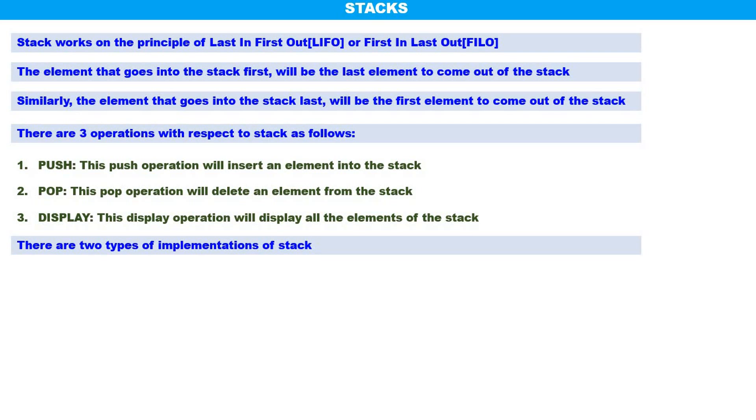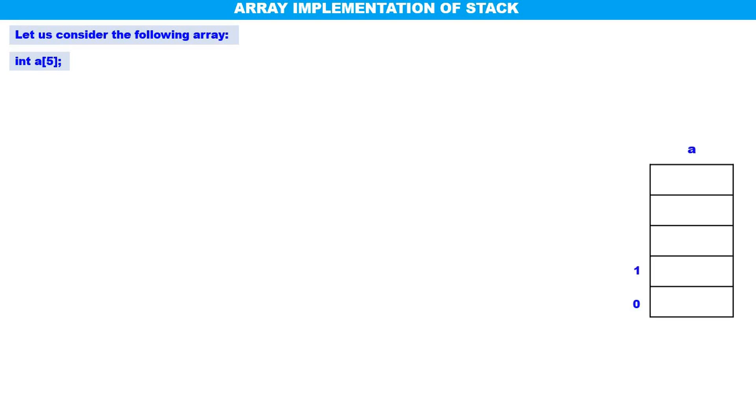There are basically two types of implementations of stack: array implementation and linked list implementation. Let us consider array implementation of stack — see how to implement stacks using arrays. Now let us consider the following array: int a of 5, an integer array which can contain 5 elements.